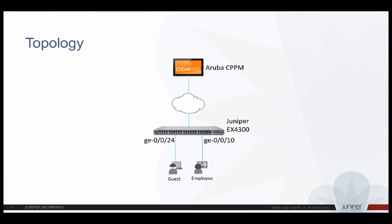This is the topology used in this demo. It is a simple topology with the Juniper EX4300 switch as an access switch and Aruba CPPM providing the RADIUS server functionality. In this demo, the guest user is connected to port 24 on the switch, and an employee is connected to port 10 on the same switch.